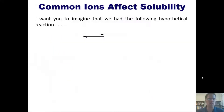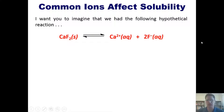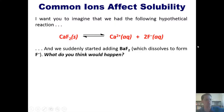I want you to imagine that we had the following hypothetical reaction: calcium fluoride solid dissociating in an equilibrium way with its respective ions — calcium cation and fluoride anion. If you had this reaction going on, imagine that we suddenly started adding barium fluoride, which is a compound that dissolves to form more F⁻. What do you think would happen?